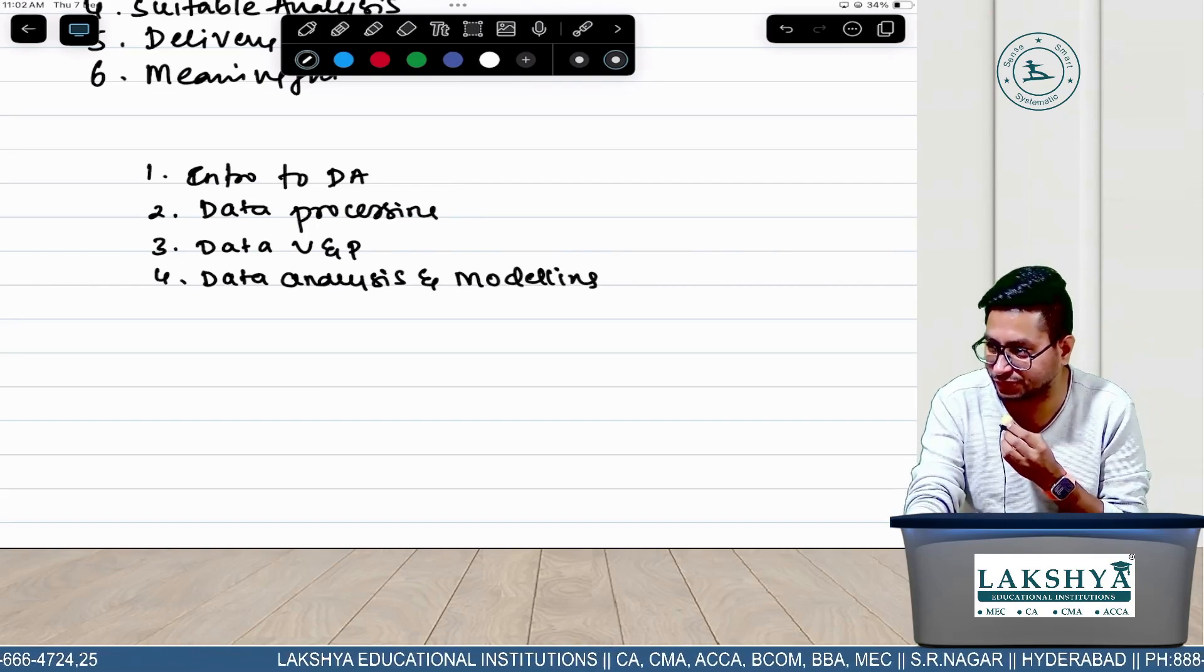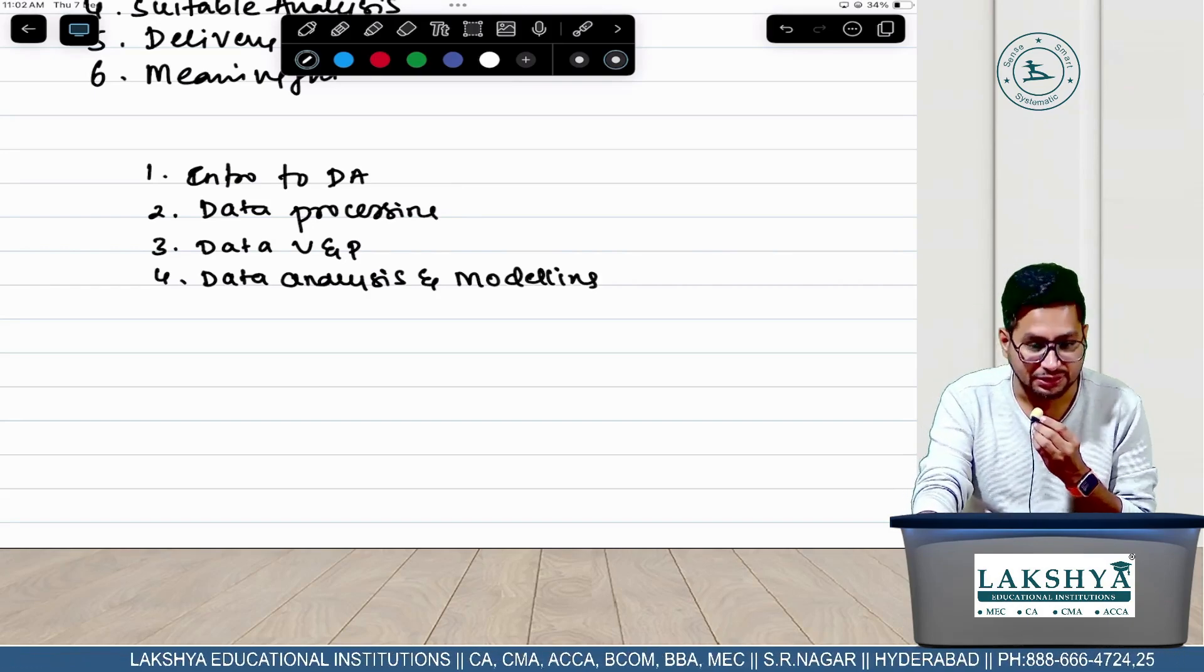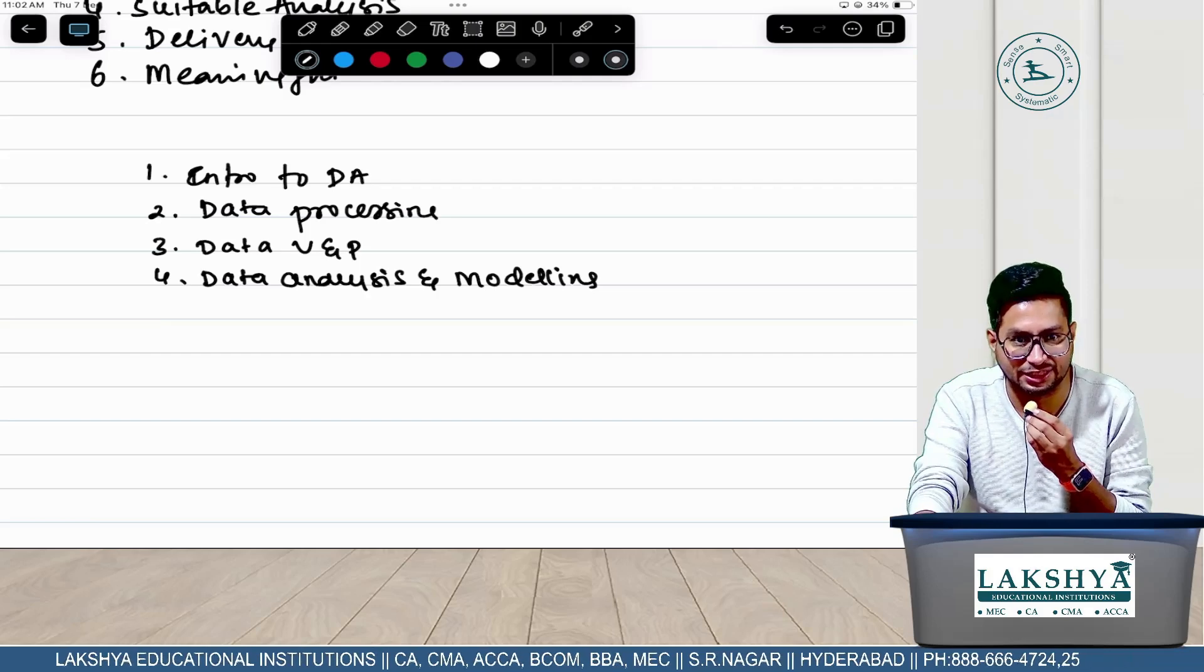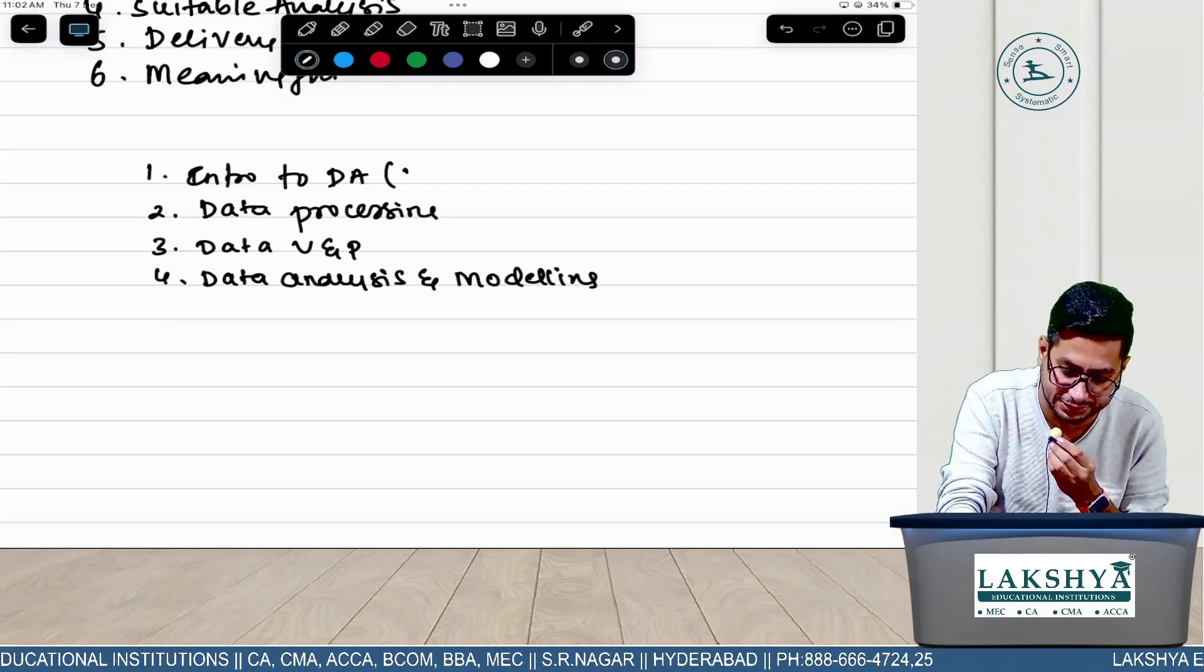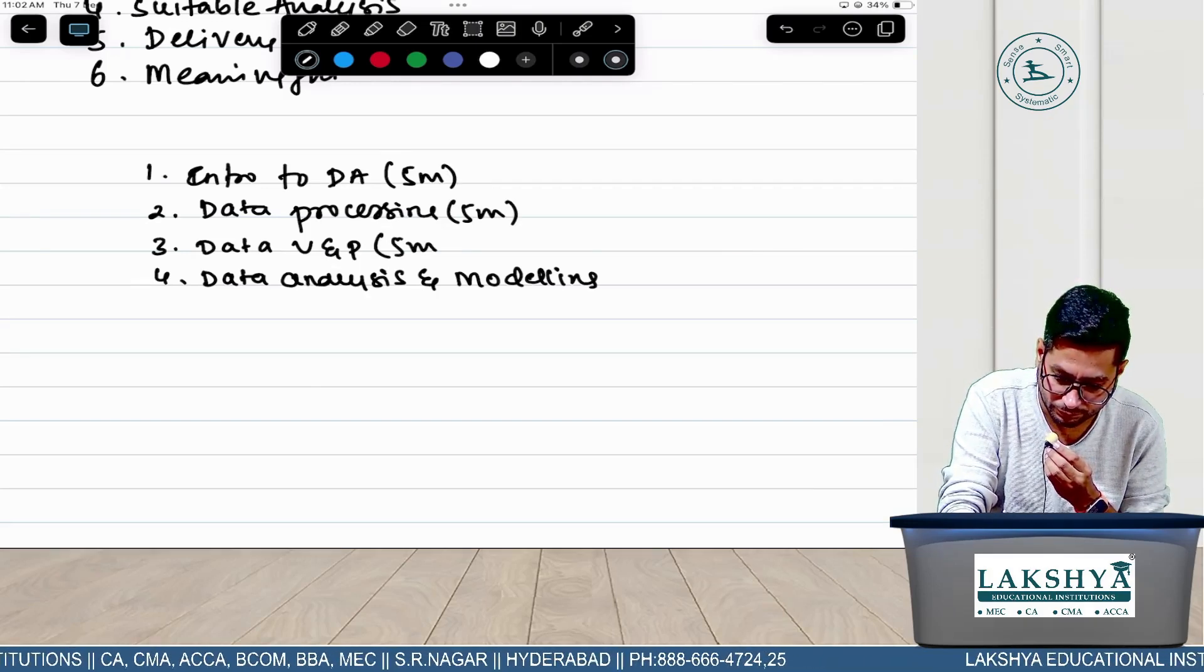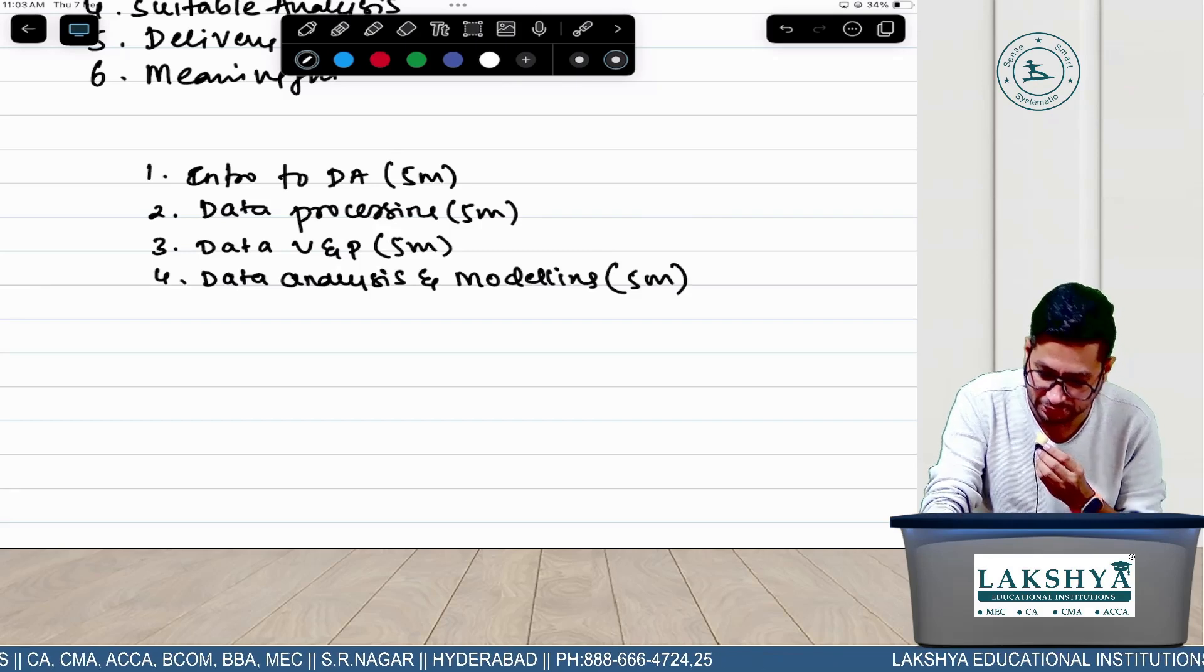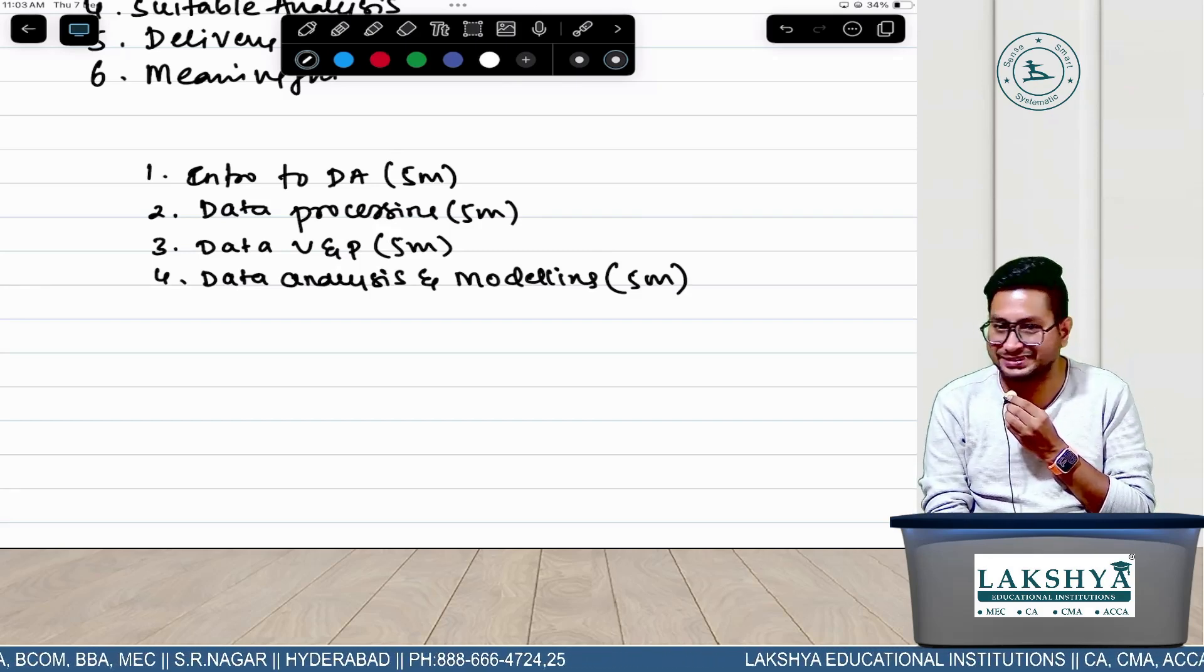These are the four chapters in our syllabus. According to ICMAI, when you go through their website, total 20 marks means equal importance is given to all chapters. So every chapter is for 5 marks.